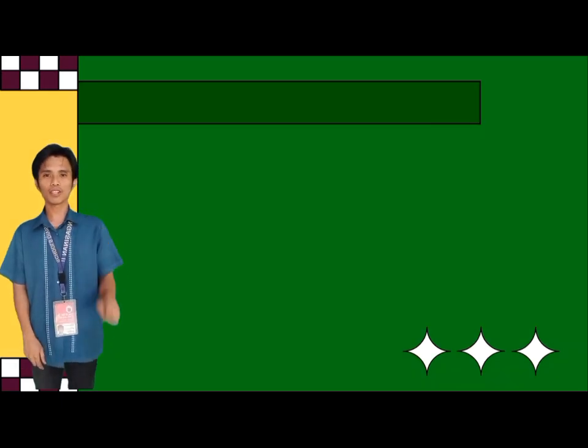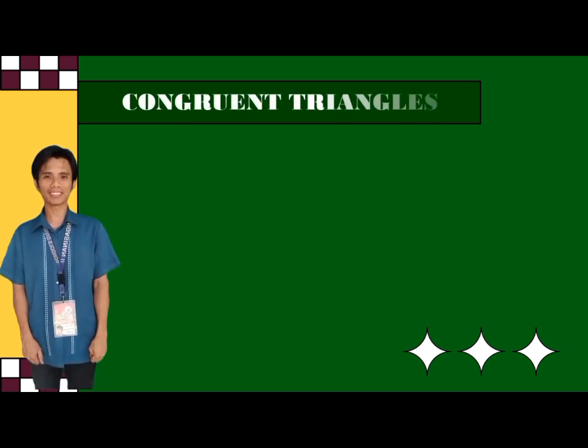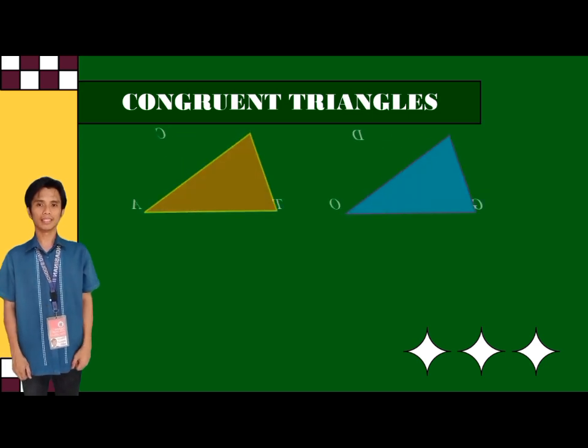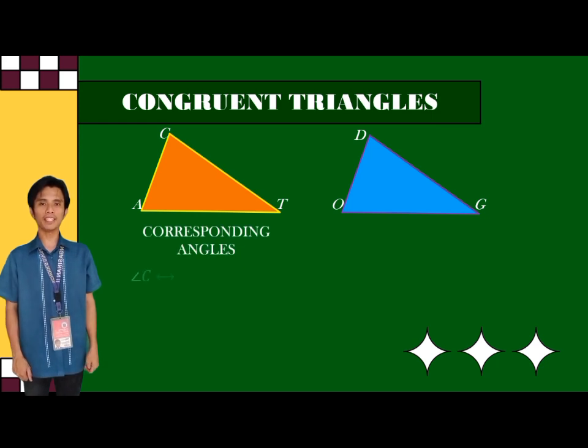Two triangles are said to be congruent if their angles and sides are congruent. In this illustration, we have triangle CAT and triangle DOG.